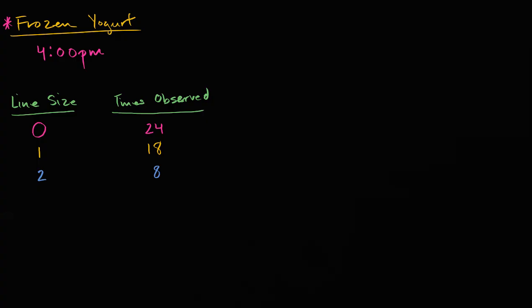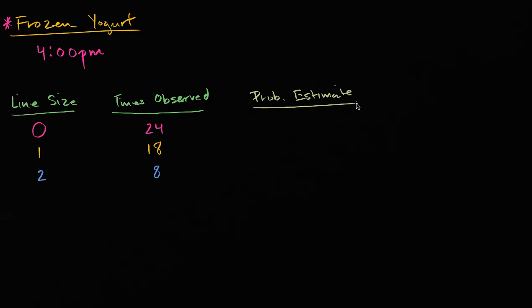So probability estimate. I'll do it in the next column. So probability, probability estimate. And once again, we can do that by looking at the relative frequency. The relative frequency of zero, well, we observe that 24 times out of 50. And so 24 out of 50 is the same thing as 0.48. Or you could even say that this is 48%.